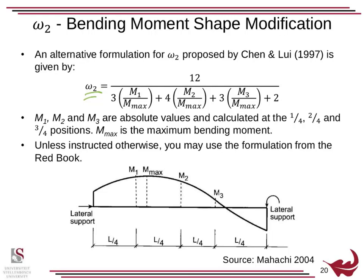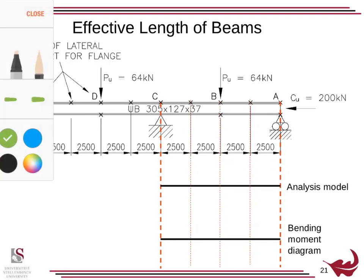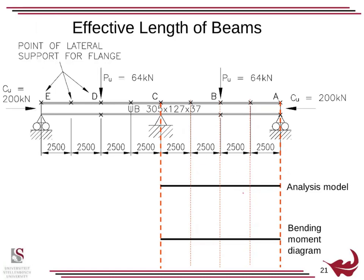The final thing we're going to go through is the effective length of beams. This is the same example as we had last time where we did it in compression, but now we're going to do it in bending. Ignore the compression loads; we're just going to analyze this purely for bending. The first thing you'll notice is this is a symmetric structure.